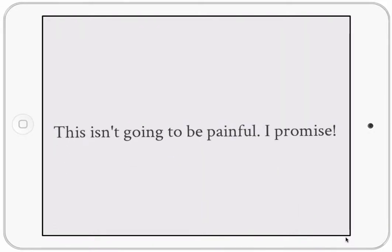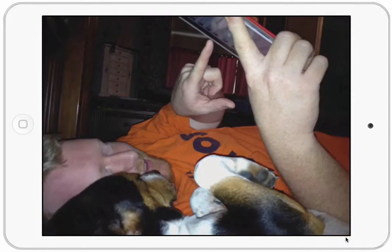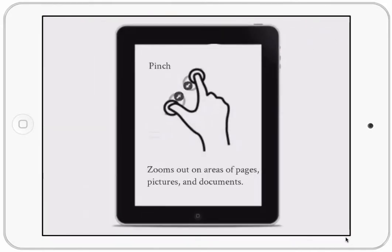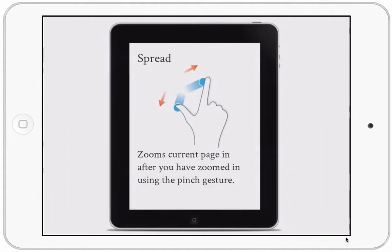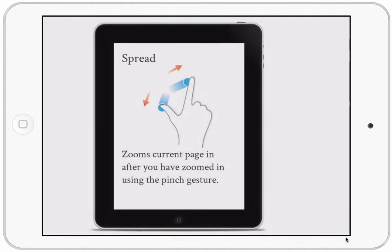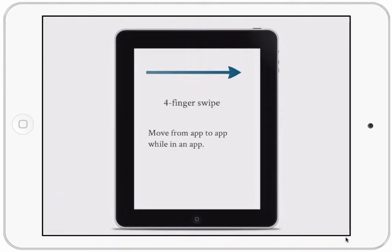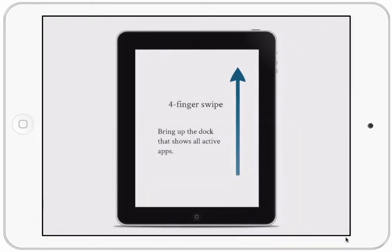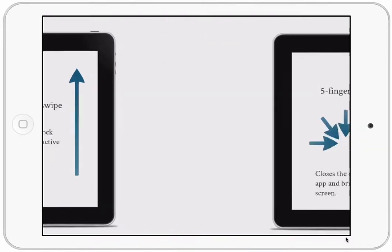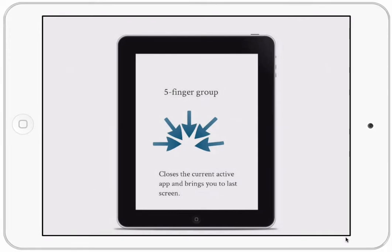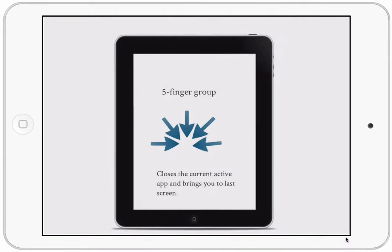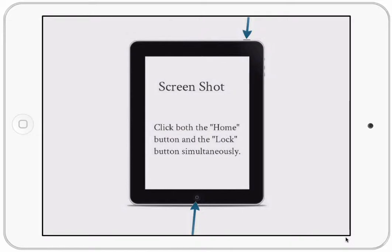Last time we talked about gestures we could do on the iPad, such as pinch and spread to zoom, four-finger swipe that went from app to app, a four-finger swipe up that brought up all active apps in our dock, the five-finger group that closed out the current app, and how to take a screenshot.